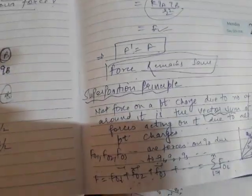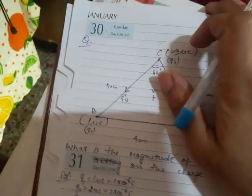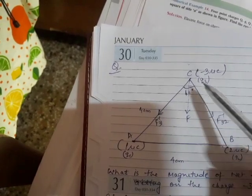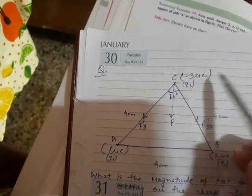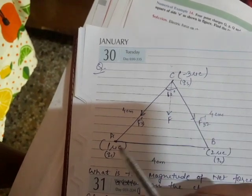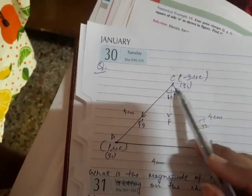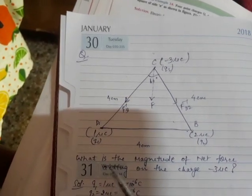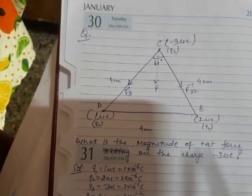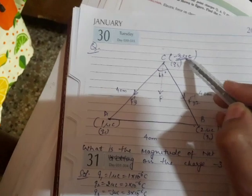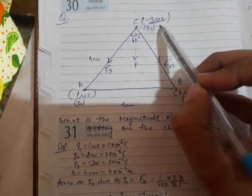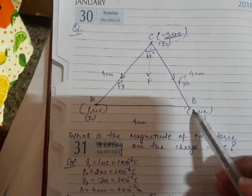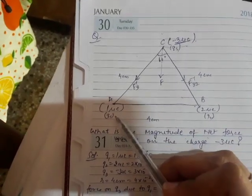Now we will do some questions based upon the superposition principle. An equilateral triangle is given to you. Three charges — one micro coulomb, two micro coulomb, and minus three micro coulomb — are placed at corners A, B, and C. You have to find out the magnitude of the net force acting on the charge minus three micro coulomb, which is lying at point C, due to the charges at A and B.